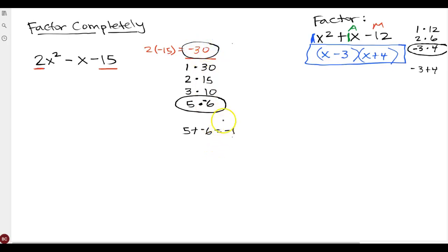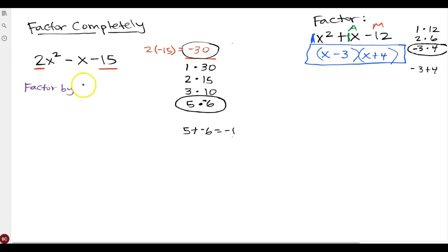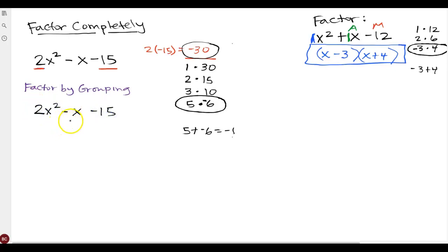We can't just put it in parentheses like we did before. I'll show you a few different ways to work this out. The first way is called factor by grouping. If you have a four-term polynomial, you factor it using factor by grouping. What I'm going to do is change this three-term polynomial into a four-term polynomial. Let me rewrite this down again.